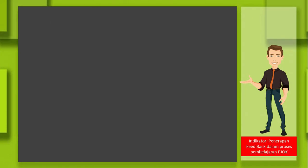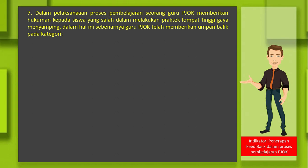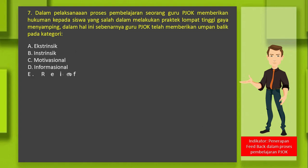Indikator berikutnya: penerapan feedback dalam proses pembelajaran. Soal nomor 7: pelaksanaan proses pembelajaran, seorang guru memberikan hukuman kepada siswa yang salah dalam melakukan praktek lompat tinggi gaya menyamping. Dalam hal ini, sebenarnya guru telah memberikan umpan balik pada kategori: A. Extrinsic, B. Intrinsic, C. Motivasional, D. Informasional, E. Reinforcement. Jawabannya adalah E: Reinforcement.